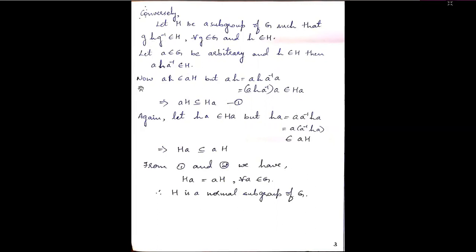We consider aH belonging to aH. But aH can also be written as aH times a⁻¹a, and since a⁻¹a is the identity element, we get back aH. So we can write this as (aHa⁻¹) times a, which belongs to HA. The reason is aHa⁻¹ belongs to H and a is an element of G, so this element belongs to HA. Since every element of aH is an element of HA, we can write aH is a subset of HA — this is the first statement.